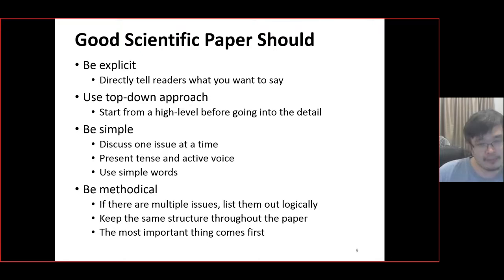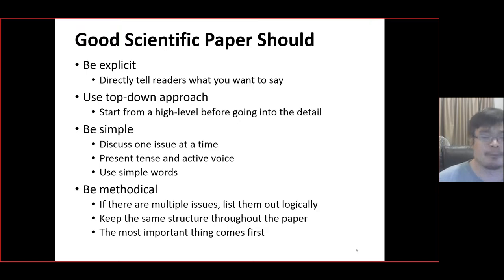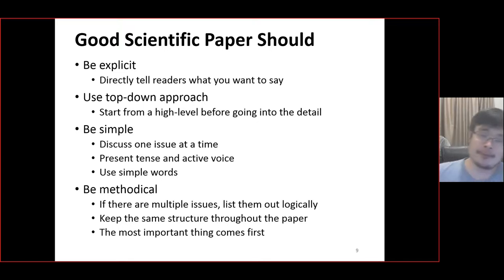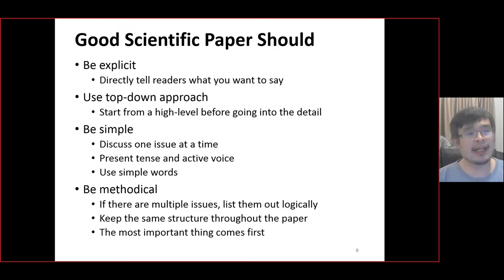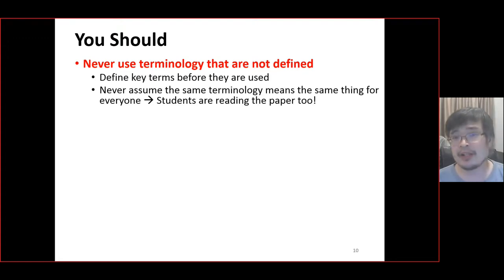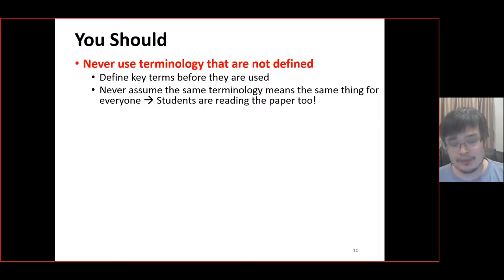Why be methodical? If there are multiple issues, list them out logically so the reader's brain can process them one at a time. Keep things simple. Keep the same structure throughout the paper. List the most important thing first — humans have a pretty short attention span, so the most important thing goes first. Rank things you're mentioning based on importance. Also, never use terminology that's not defined. Define key terminology before you use it — don't assume that the same term means the same thing to everyone. The same terminology used in one area might mean something different in another area.